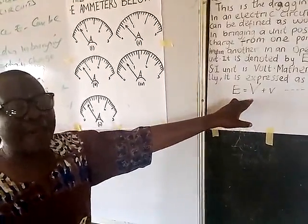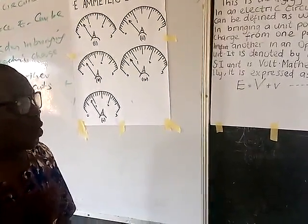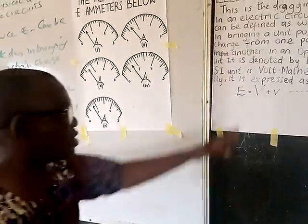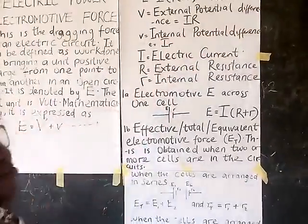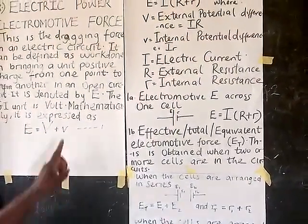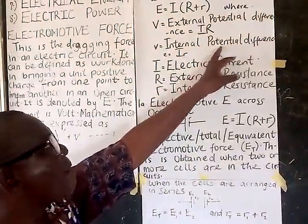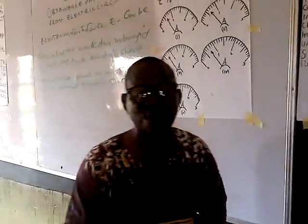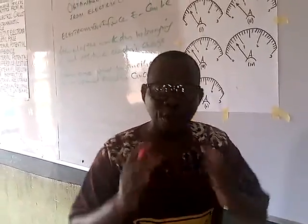Electromotive force E can be expressed as V plus v, where capital V stands for external potential difference and small v stands for internal potential difference. So the electromotive force is the sum of these two potential differences: external and internal.